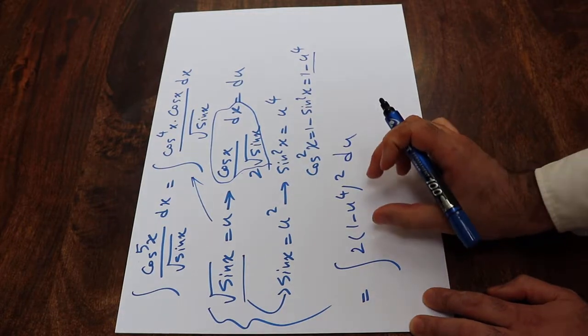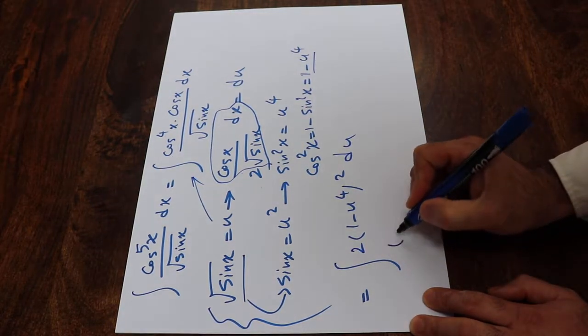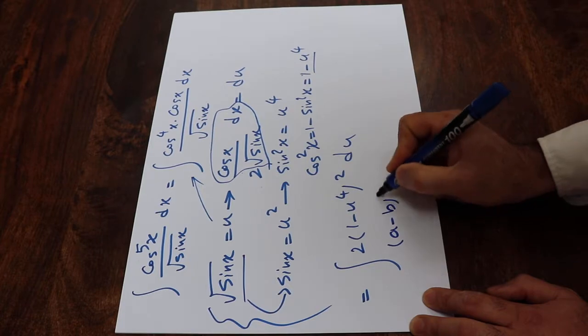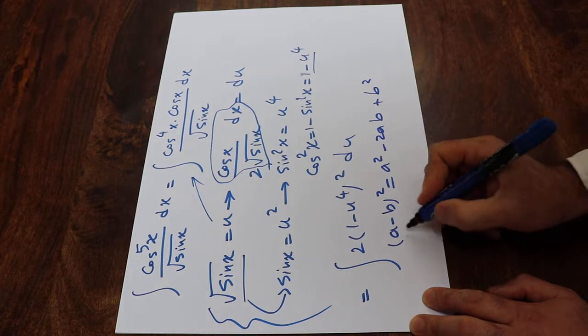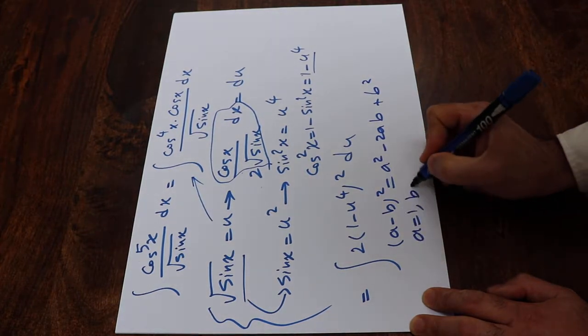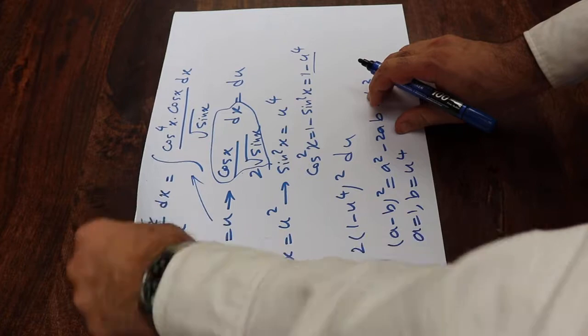So all you need to do here is to expand this expression. So from algebra, you know that a minus b with the power of 2 equals a squared minus 2ab plus b squared. So here a equals 1 and b equals u to the 4th. So therefore,